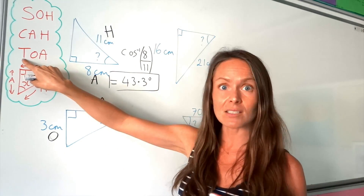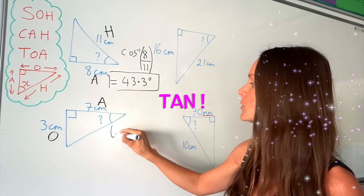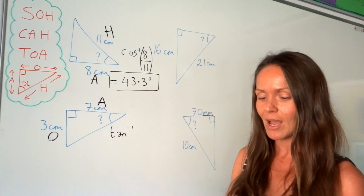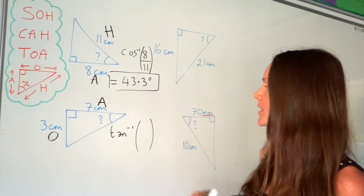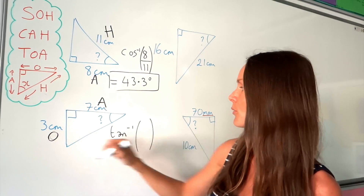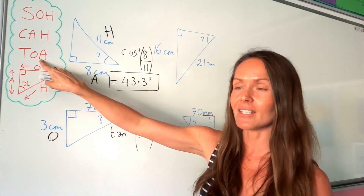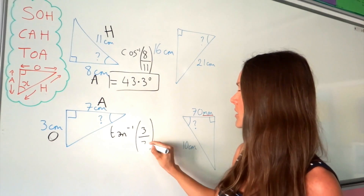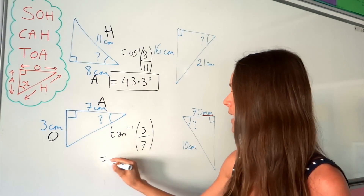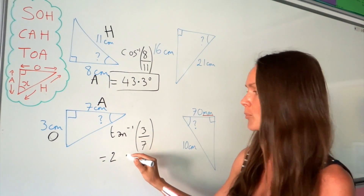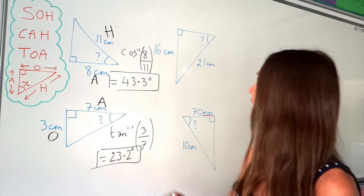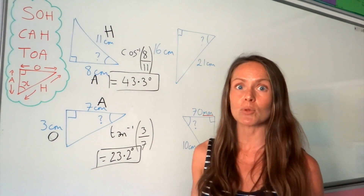This time you need tan⁻¹, so press shift followed by tan on your calculator. Then divide opposite by adjacent: opposite on top, which is 3, and adjacent underneath, which is 7. Put tan⁻¹(3/7) into your calculator, round to one decimal place, and you get 23.2 degrees.